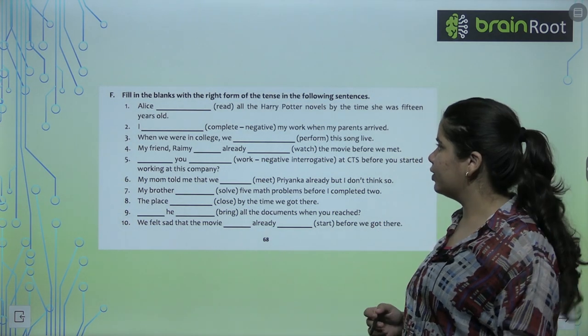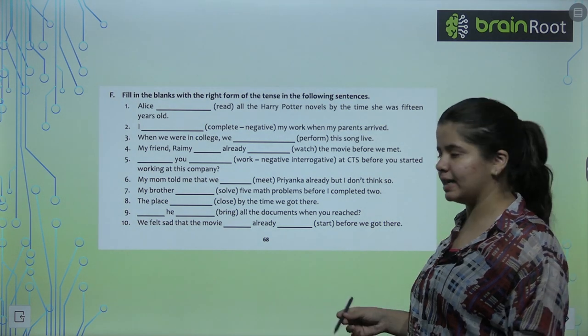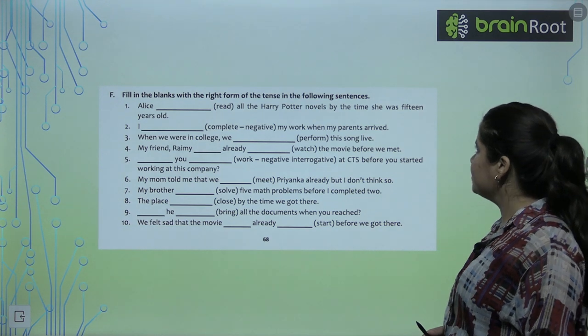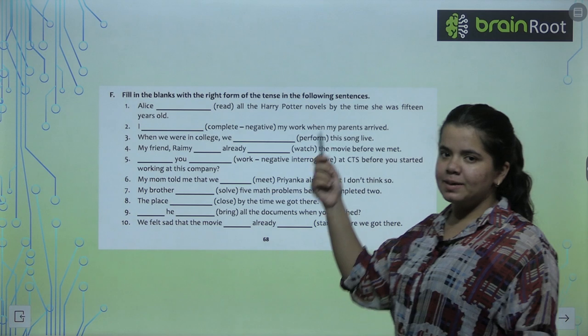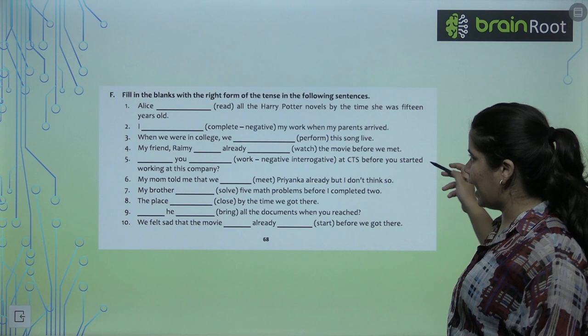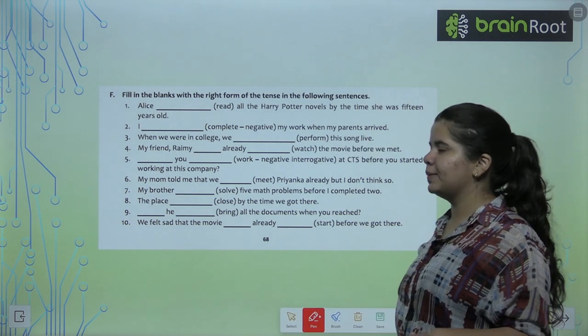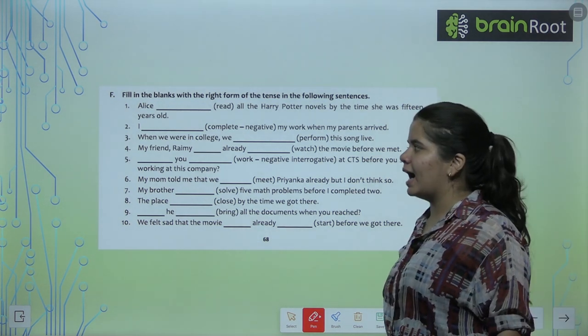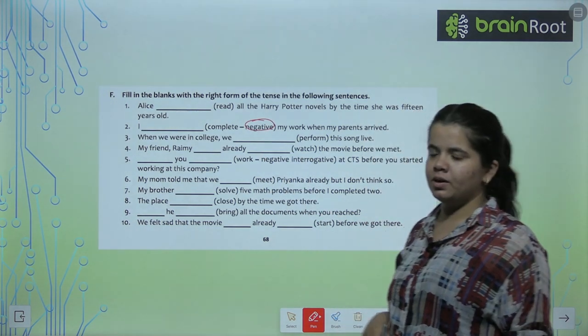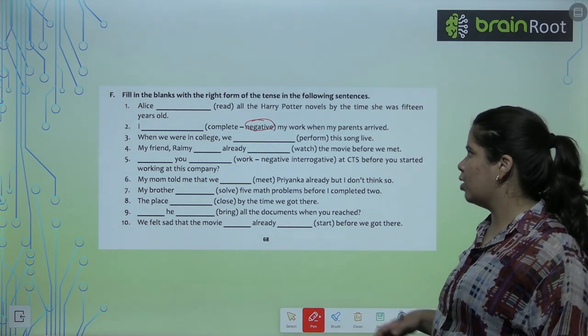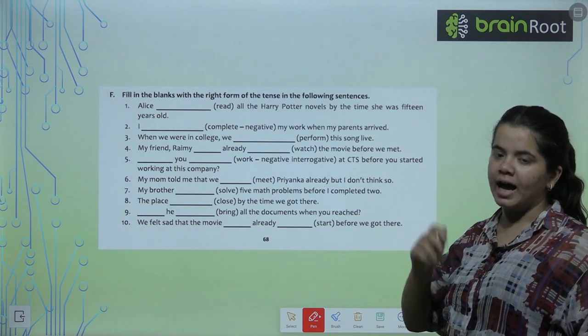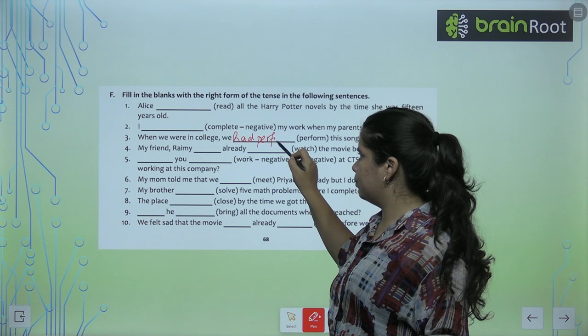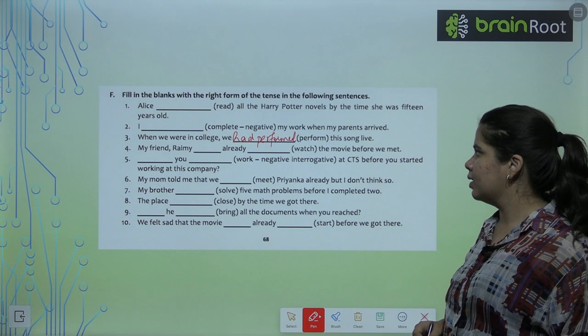One more exercise we have here, Exercise number F. In this exercise you have to fill in the blanks with the right tense. First is I dash all the Harry Potter books by the time she was 15 years old. Alice had read all the Harry Potter books by the time she was 15 years old. I dash my work when my parents arrived. I had not completed my work because you have to see negative. When we were in college we had performed the song Life. Have performed will it come or had performed? Can you guess? Yes! We had performed.